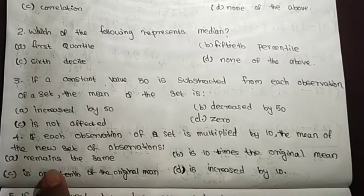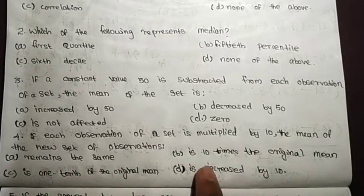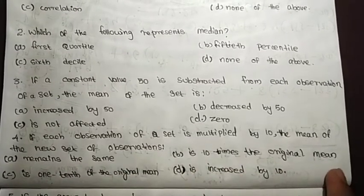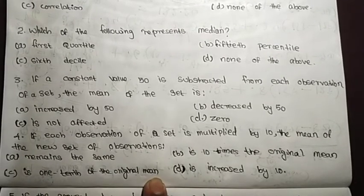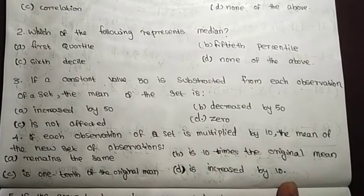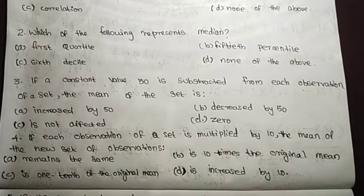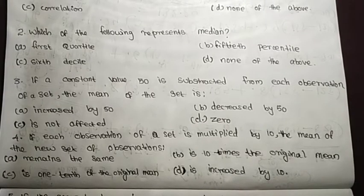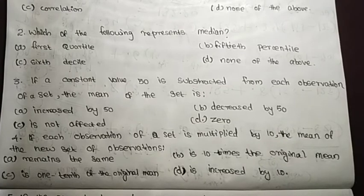The mean of the new set will be ten times the original mean. If you multiply each observation by 10, then the mean is also multiplied by 10, making it ten times the original mean.